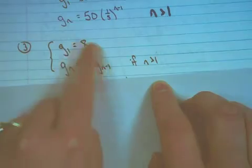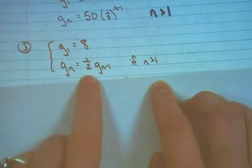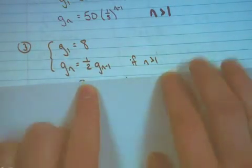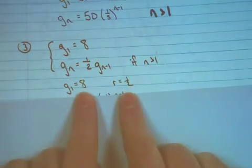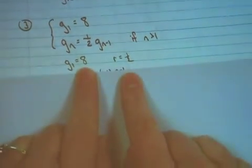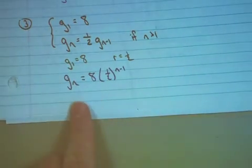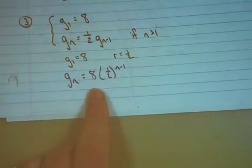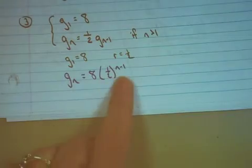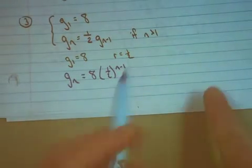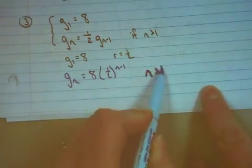8 is the first term in my sequence. My common ratio, my r value, is 1 half. I've identified those. And now I can plug them in to the explicit formula. And I will have that g sub n is equal to 8 multiplied by 1 half raised to the n minus 1 power, again for n greater than 1.